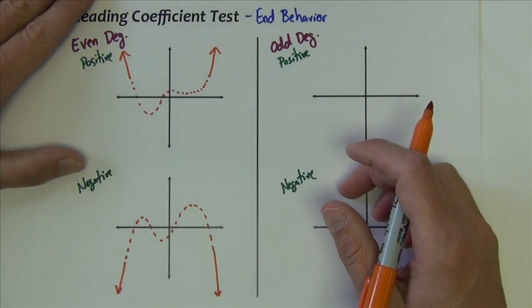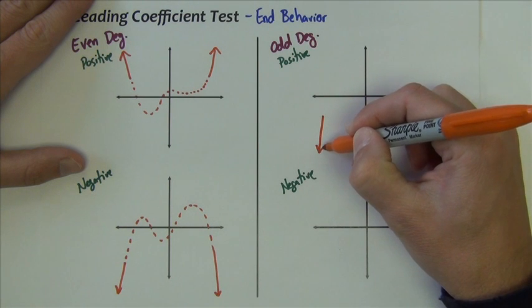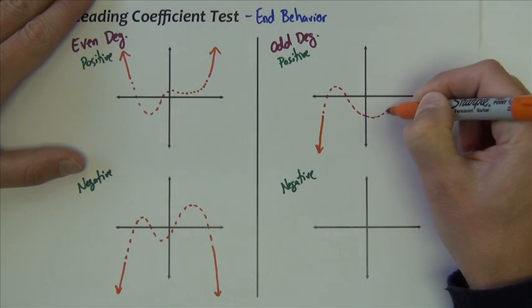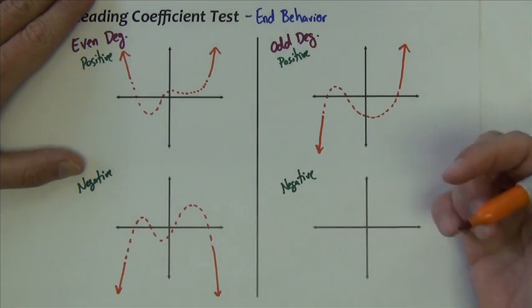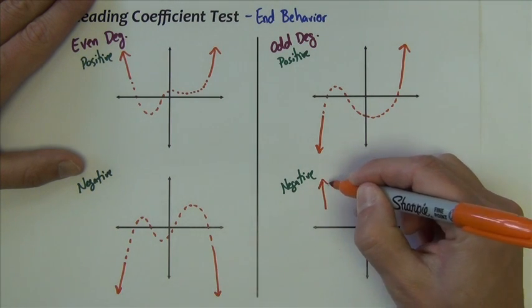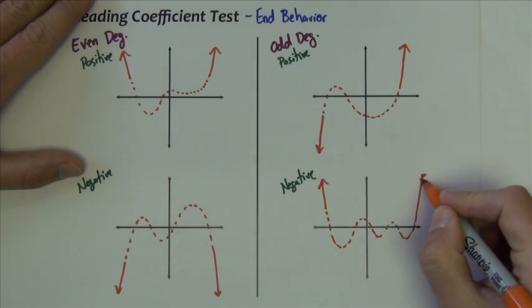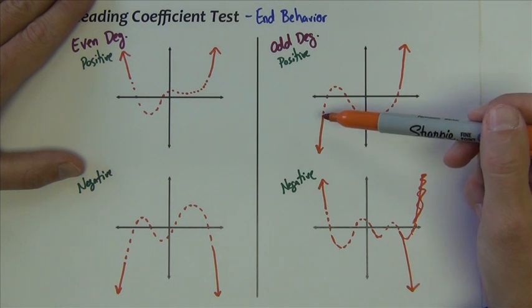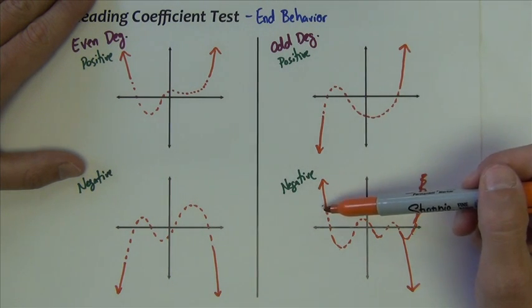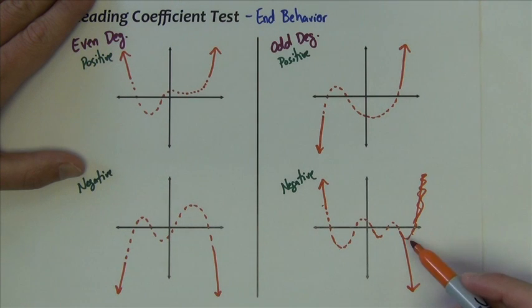If it's odd degree, the ends are going to do opposite behavior. If it's odd and positive, it'll go down on the left and up on the right, with all sorts of possibilities in the middle. If it's odd and negative, it's just going to be the flip of that — up on the left and down on the right. So with odd degree, positive or negative, it's either down-left/up-right, or up-left/down-right.